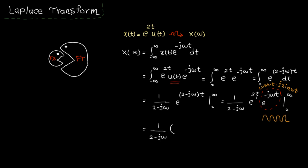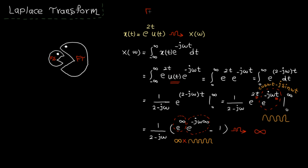Now let's replace t by infinity, then t by 0. Exponential to the power of 0 is 1. This term is pure oscillation. e to the power of infinity is infinity, and the multiplication goes to infinity. This means the Fourier transform doesn't exist for this function.